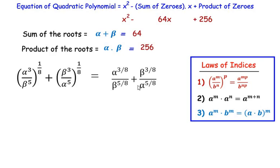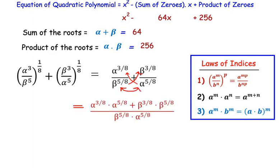The next step is cross multiplication — we multiply the alphas together and the betas together, then multiply the denominators with each other. So we get α^(3/8) × α^(5/8) + β^(3/8) × β^(5/8), all divided by the product of the denominators.